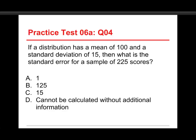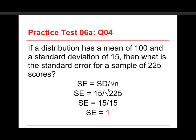Number four: if a distribution has a mean of 100 and a standard deviation of 15, then what's the standard error for a sample of 225 scores? Choices are 1, 125, 15, or cannot be calculated without additional information. The answer to this one is 1. And it's a little bit of a trick question because it turns out that knowing the mean is irrelevant. All you need is the formula for the standard error. So SE for standard error is equal to the standard deviation divided by the square root of n, or the sample size. So in this case, the standard deviation is 15, and the sample is 225. So we have SE is 15 divided by the square root of 225. The square root of 225 is 15. So 15 divided by 15 is 1. And that's our standard error. The mean is irrelevant to this one.